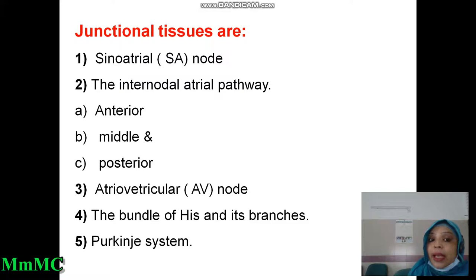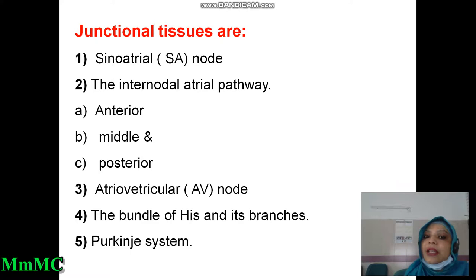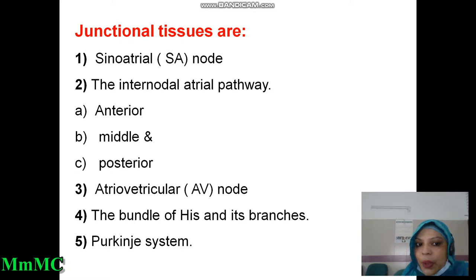The junctional tissues are: first, the sinoatrial node or SA node; second, the internodal atrial pathway; third, the atrioventricular or AV node; fourth, the bundle of His and its branches; and fifth, the Purkinje system. In your exam, students often forget to mention the internodal pathway. Without this internodal atrial pathway, conduction from right atrium to left atrium or from right atrium to AV node is not possible, because there are three types of internodal pathway: anterior, middle, and posterior.